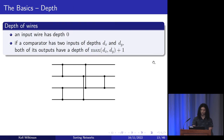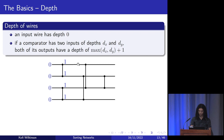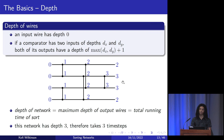I'm going to define the depth of the wires in the network inductively. An input wire starts off having depth zero, and if a comparator has two inputs of depths dx and dy, both of its outputs have a depth of max(dx, dy) + 1. Starting with zero on all wires, after the first set of comparators the depths become 1, then 2, then 3. The depth of the entire network equals the maximum depth of the output wires, which also equals the total running time of our sort. So this network has depth 3 and will take three time steps to execute.